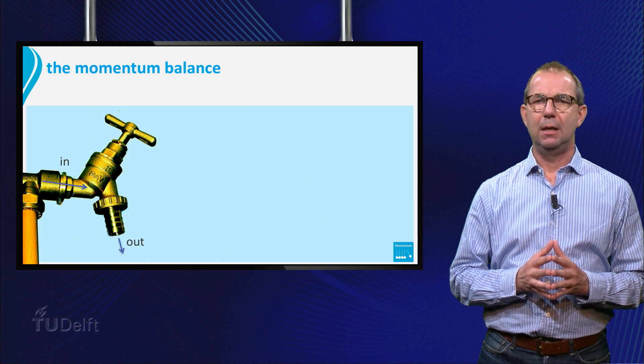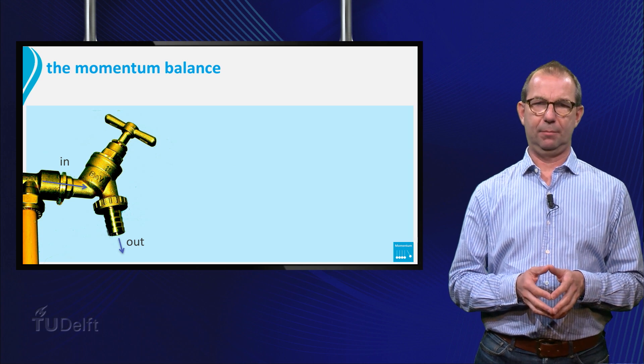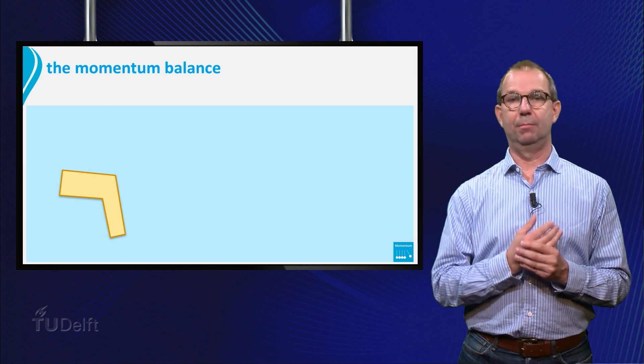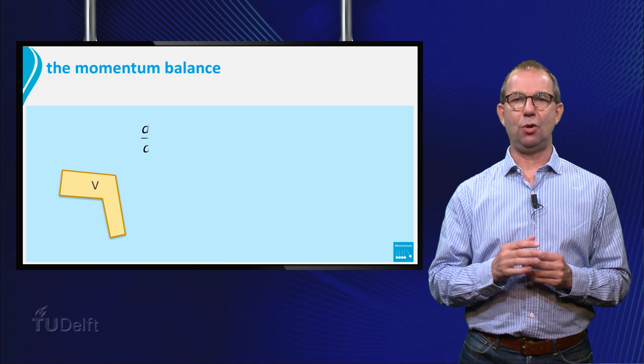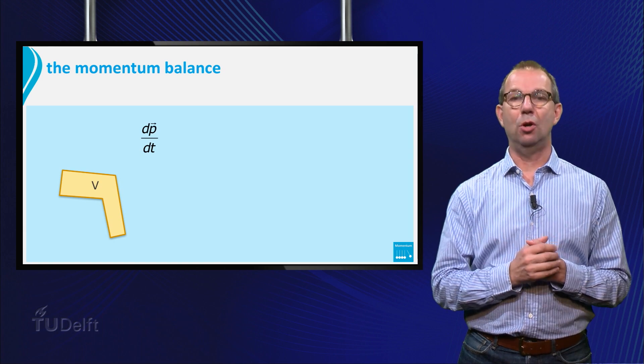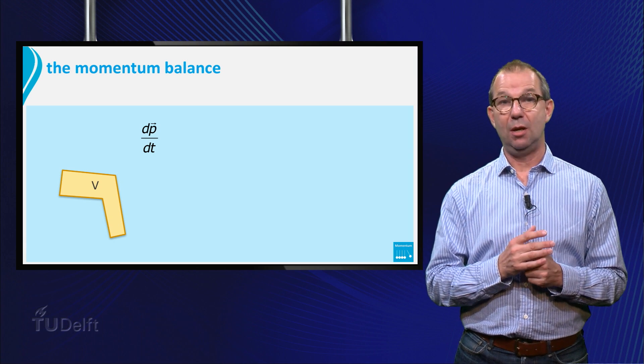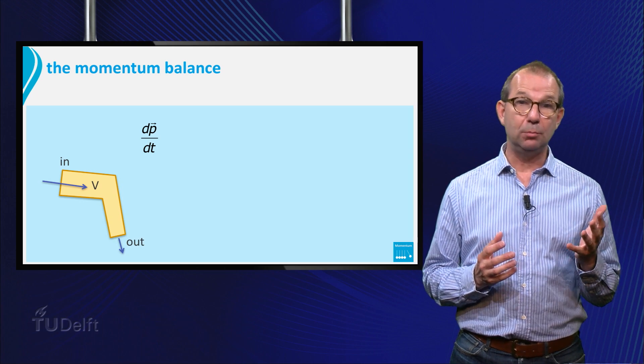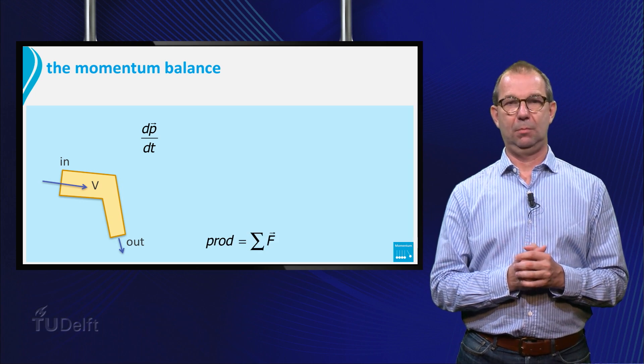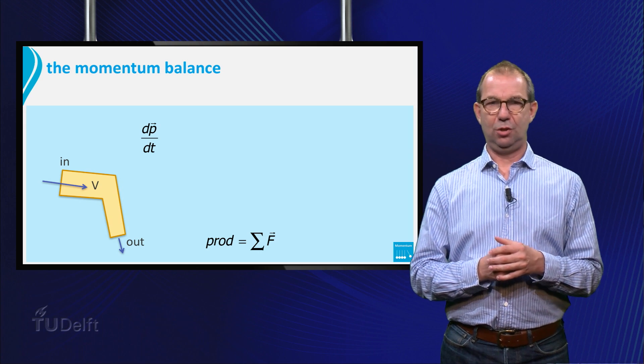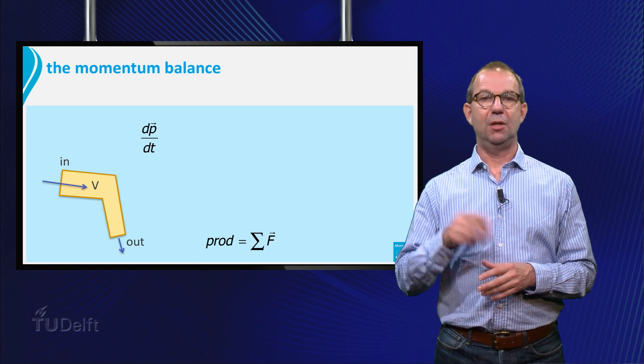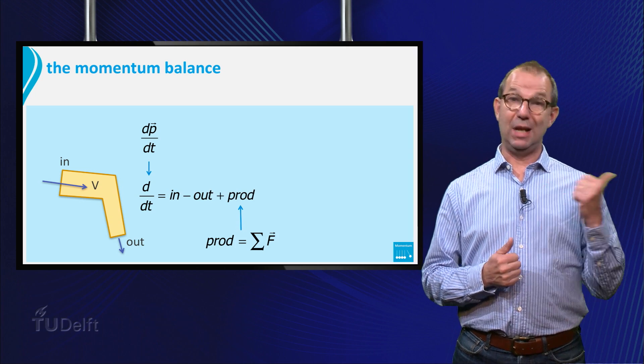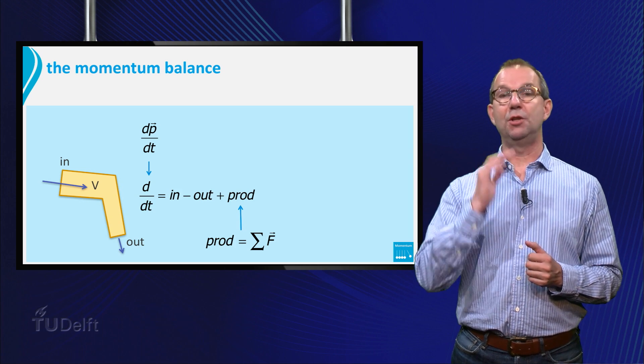Let's draw this like any balance drawing. We have a control volume capital V. We keep track of the change of momentum inside the control volume. This can change because of inflow of momentum, of out flow of momentum, or production of momentum. We can write this using our standard recipe, d/dt equals in minus out plus production, with the left and most right term already known.